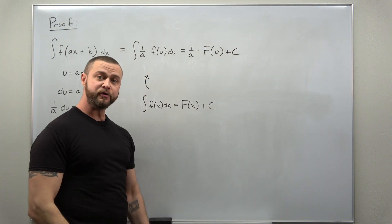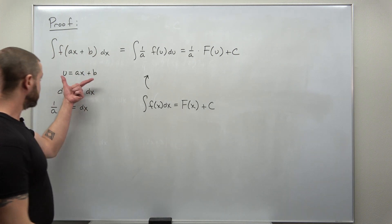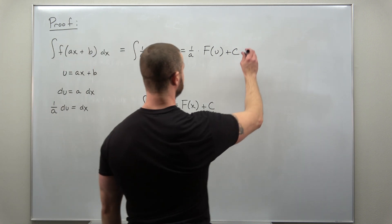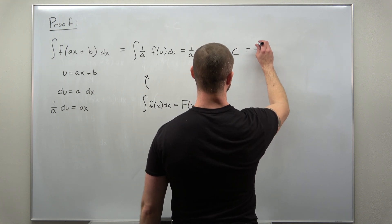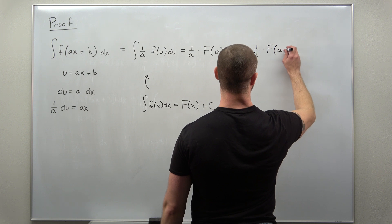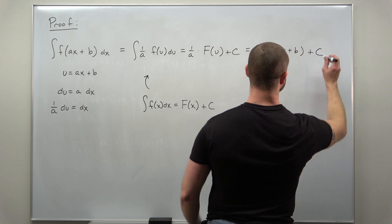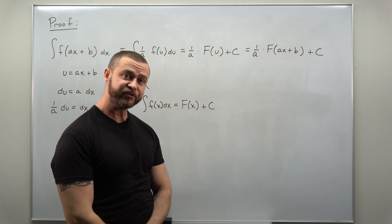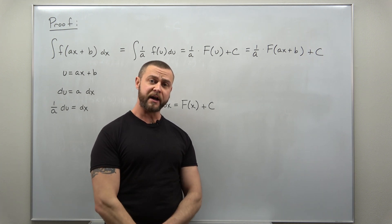And as always, with u substitution, we convert u back to x using our substitution. And that completes the proof for the 1 over a shortcut.